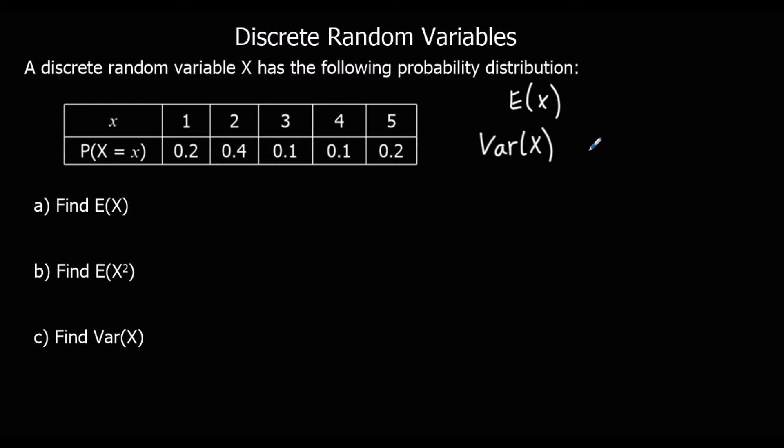That's a measure of variance for the random variable. To find E(X), the expected value of X, the mean of X, all we do is we times each value of X by its probability and add them all up.